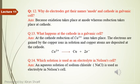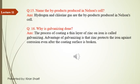Question number 15: name the by-products produced in a Nelson cell. Hydrogen and chlorine are the by-products in the Nelson cell.